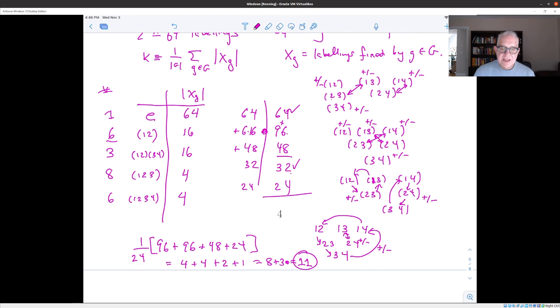So there are 11 different graphs on four vertices up to the action of symmetry. And if you're curious to see what they are, you can look on the Wikipedia page for Burnside's lemma. And they're drawn there for you. Or you can try to figure them out. Buried in this calculation are some hints as to how you might be able to work them out. But I'm not going to do that. I'm going to stop here.